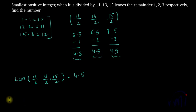So the LCM of 11 by 2, 13 by 2, and 15 by 2 will be equal to the LCM of 11, 13, and 15 divided by the HCF of all the denominators, which are 2 in each case, minus 4.5.